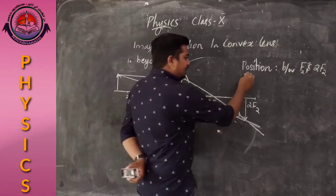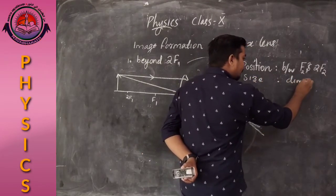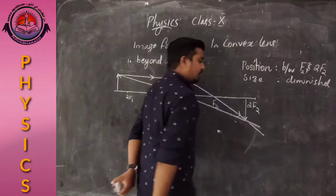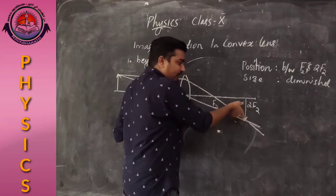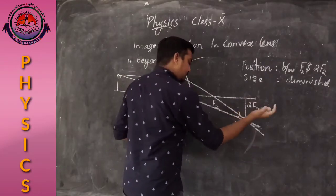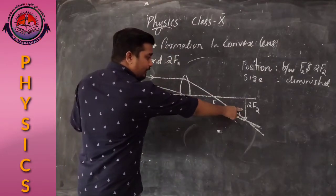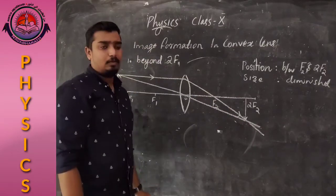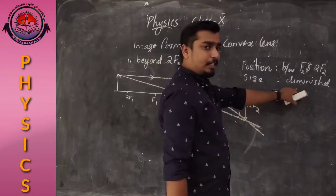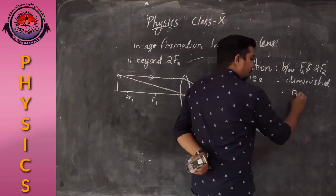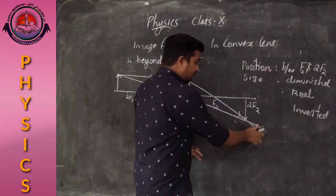The position of the image is between F2 and 2F2. The size of the image is diminished, meaning the image is small compared to the size of the object. The image is real and inverted.